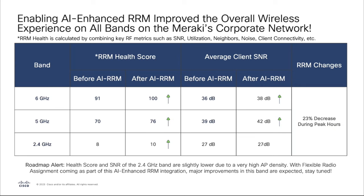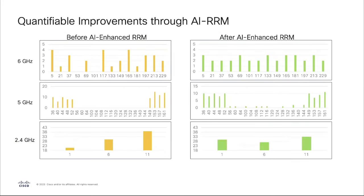All of this comes together as a better RRM health score. Looking at the channel distribution graph: in the prior state the yellow bars show many missing or imbalanced channel assignments. With the new trend-based AI-enhanced RRM, this fluctuation is much more flattened — we no longer see the channel imbalance. Everything is now balanced and fully utilized, giving customers better visibility into their RF environment.